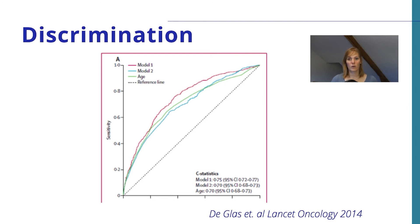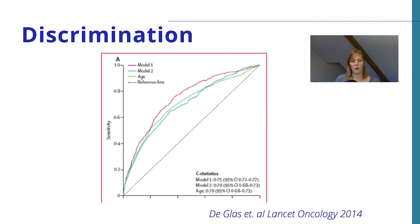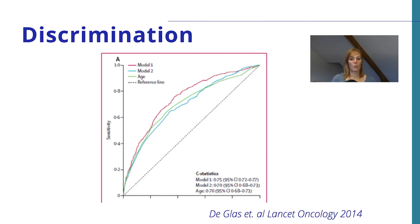The model calculates for you the area that is under the curve presented here. If you calculate the area under the dotted line — which represents what you'd get by just flipping a coin — you would get an AUC of 0.5, meaning the model does not perform at all. On the other hand, if you have the perfect model that predicts everything completely right, the AUC or C statistic would be 1.0. Generally, an AUC of 0.7 or higher, or even 0.8, is considered really good for a predictive model. This also allows you to compare the performance of different models by putting them together in a graph.